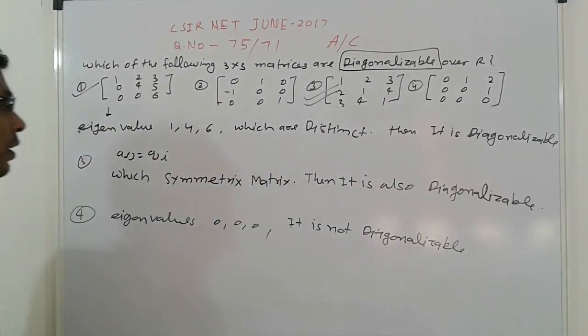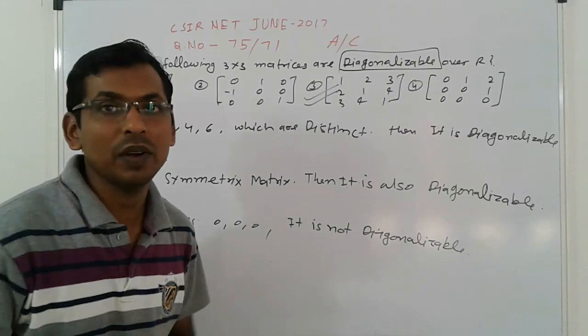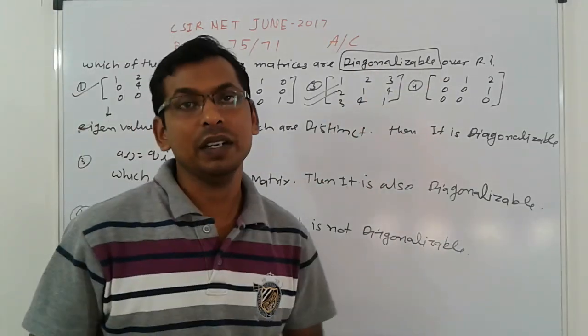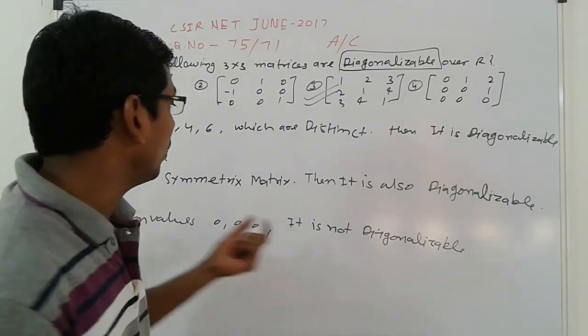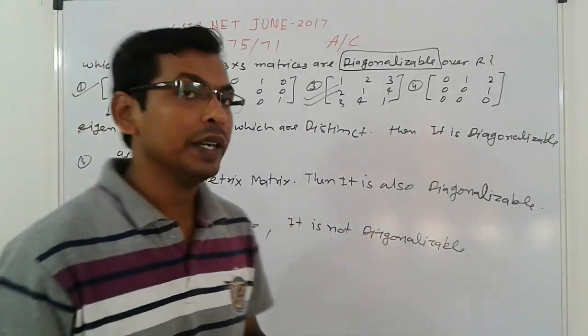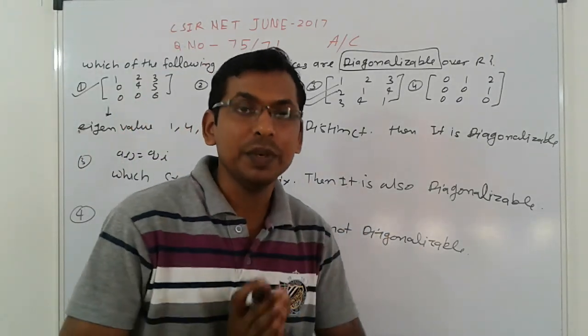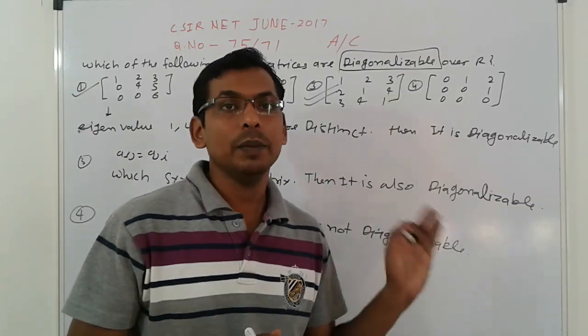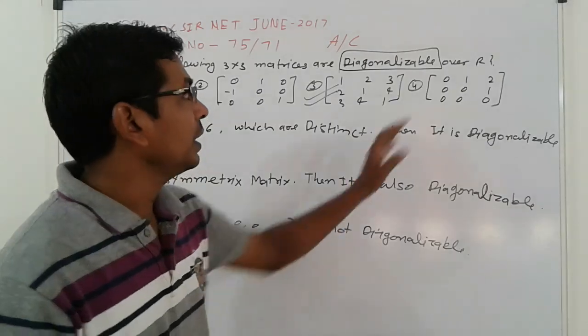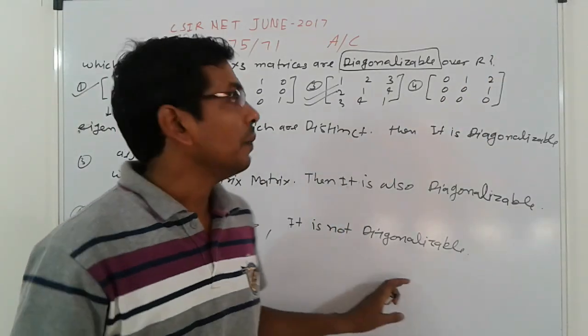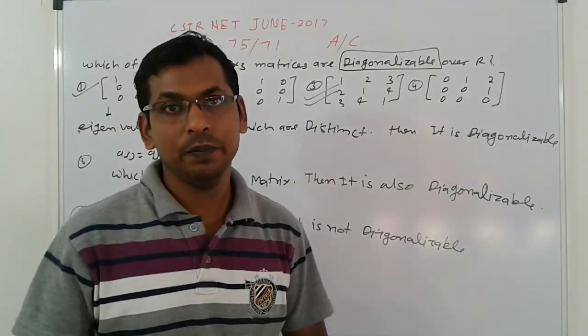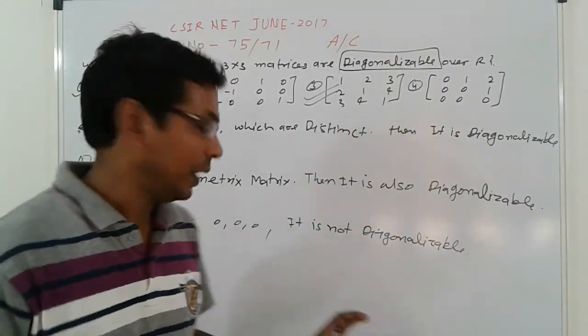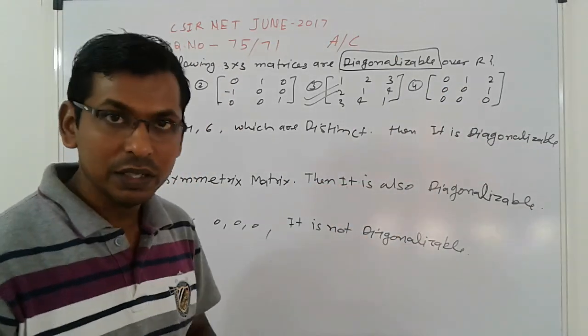So it is not diagonalizable because we cannot find three distinct eigenvectors. In this case, if you have repeated roots and can find three eigenvectors, it's diagonalizable. But here we do not find three eigenvectors, we can find only two. So the fourth option is wrong.